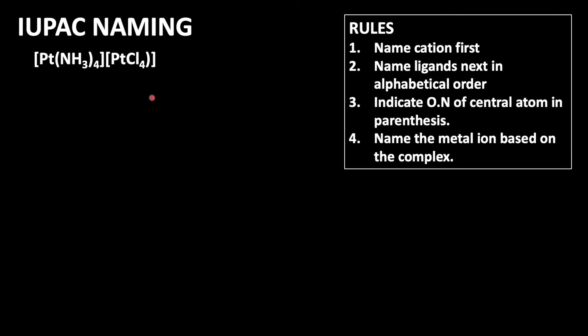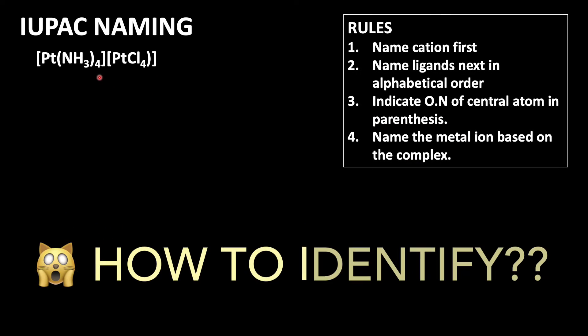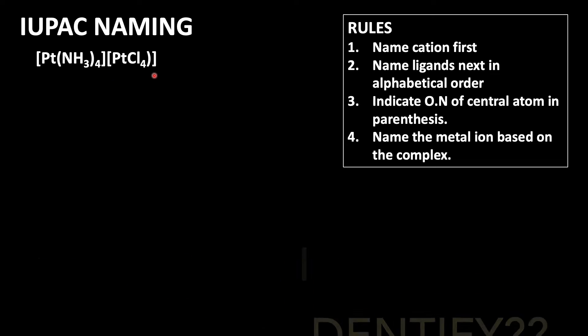Using this information, let us find out the IUPAC name for our compound [Pt(NH₃)₄][PtCl₄]. So here, name the cation first. How do we find out which one is the cationic complex and which one is the anionic complex?